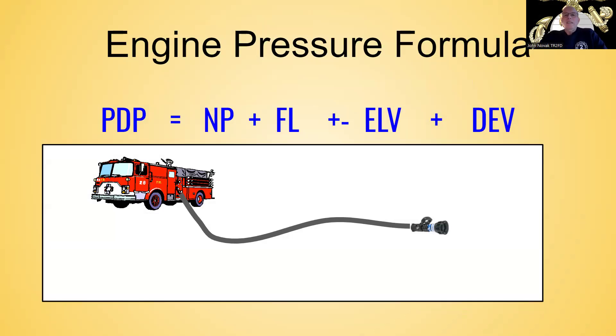So in order to get the correct engine pressure, we also refer to that as the pump discharge pressure. We have to have a little understanding of what friction loss is. So in order to get our pump discharge pressure, we need to add up the nozzle pressure.